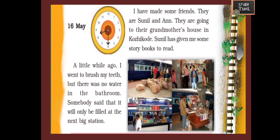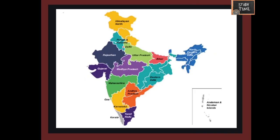Omana had made some friends during her journey — their names were Sunil and Ann. They were going to their grandmother's house in Kozhikode. Sunil gave her some story books to read, so they were sharing their things. A little while ago Omana went to brush her teeth but there was no water in the bathroom. Somebody said it would be filled at the next big station.